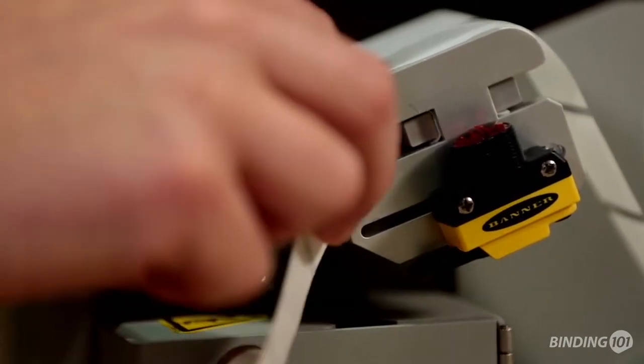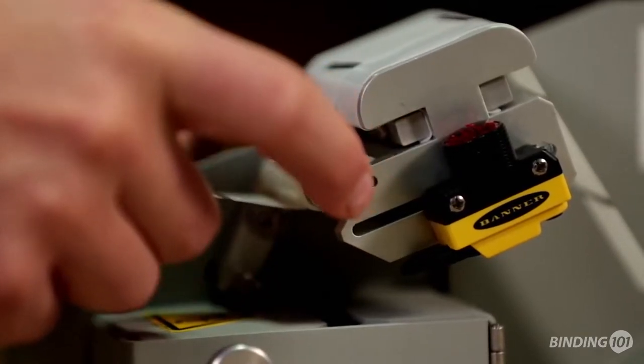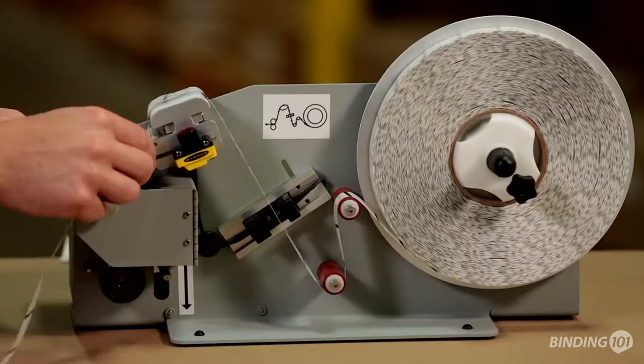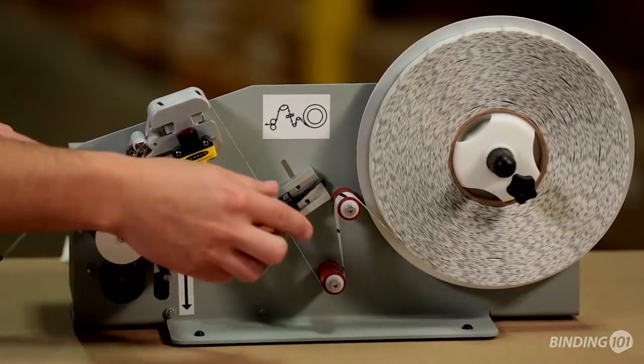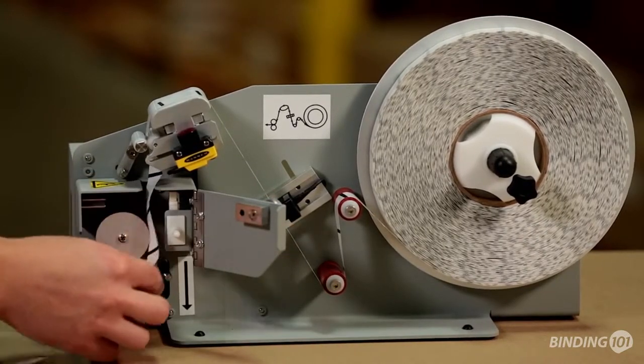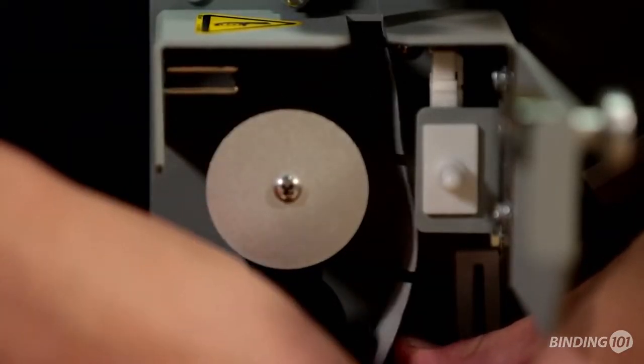Press down on the peeler roller separation lever to separate the peeler rollers and hold to continue threading the liner between the peeler rollers. Once the liner has been pulled through, release the separation lever and open the door to the protective shroud.